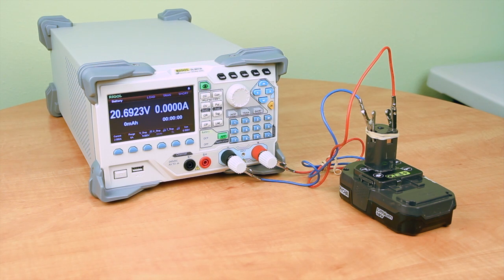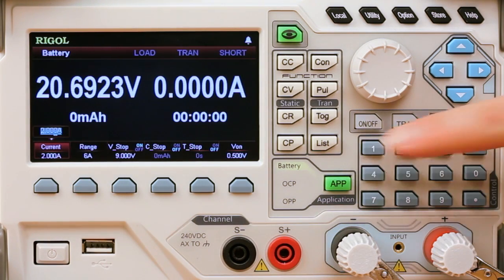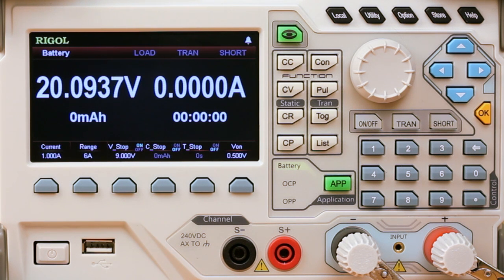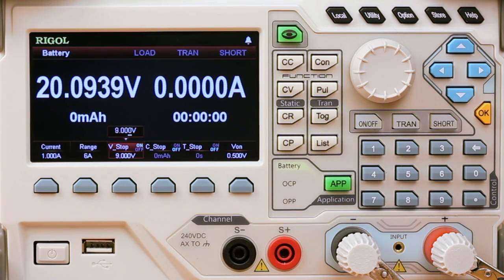We hit the app button and go into battery mode. Let's set the current for a 1 amp constant current pull. Here we're going to use the V-stop to stop our test. Pretty common on a battery test to stop it at roughly half the voltage of the normal battery voltage. Here we're going to set 9 volts for our 18 volt battery.